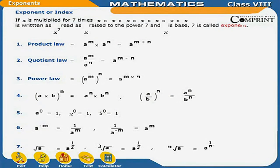Exponent or Index. If X is multiplied 7 times — X into X into X into X into X into X into X — it is written as X to the power 7, read as X raised to the power 7. Here X is the base and 7 is called the exponent.